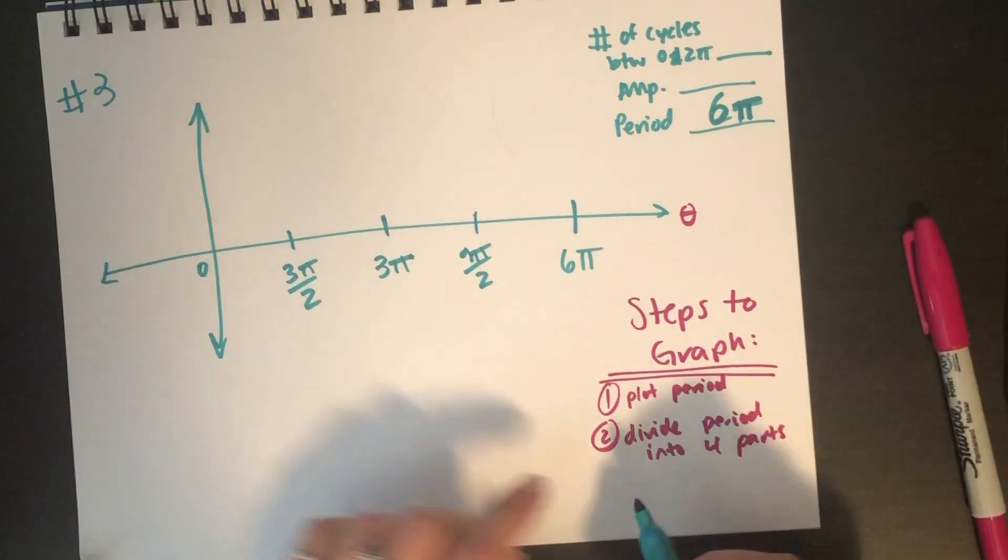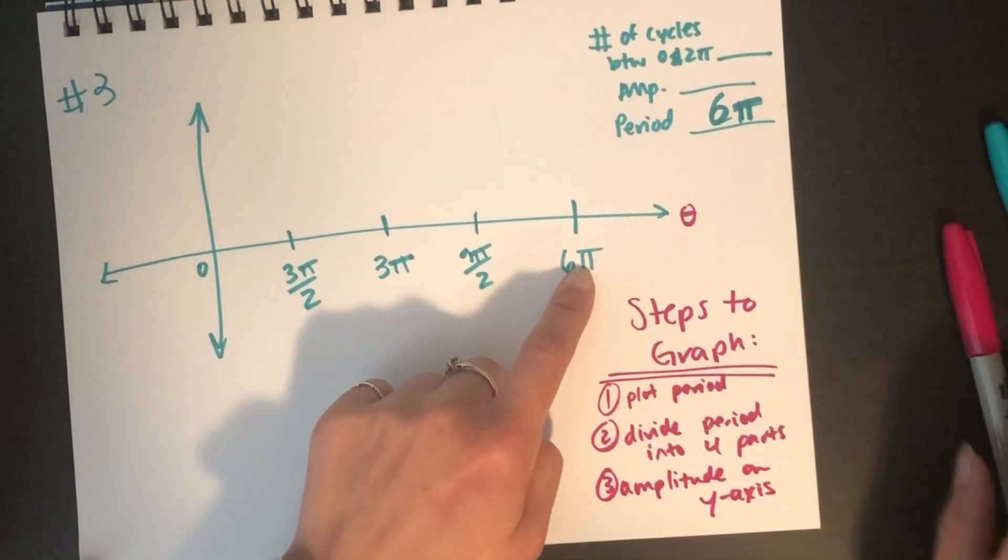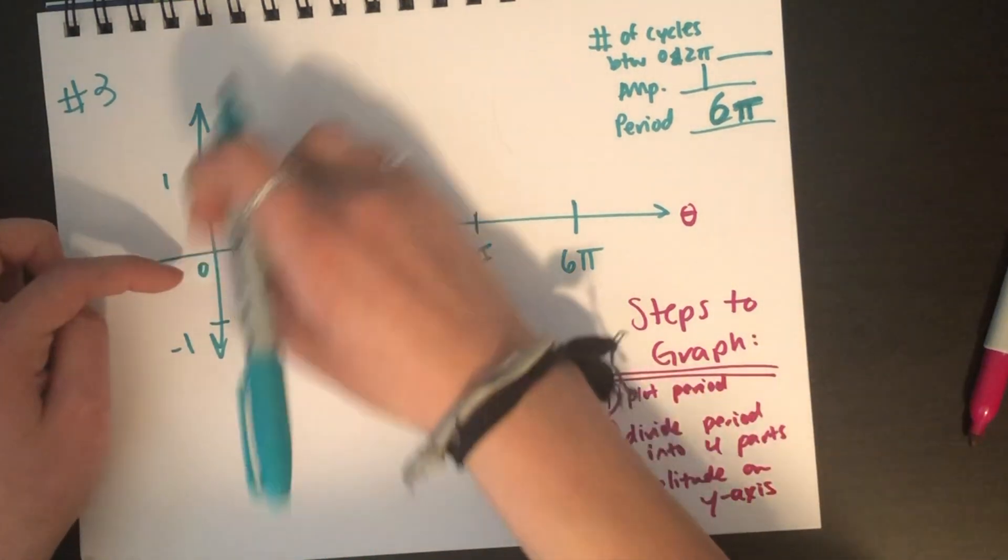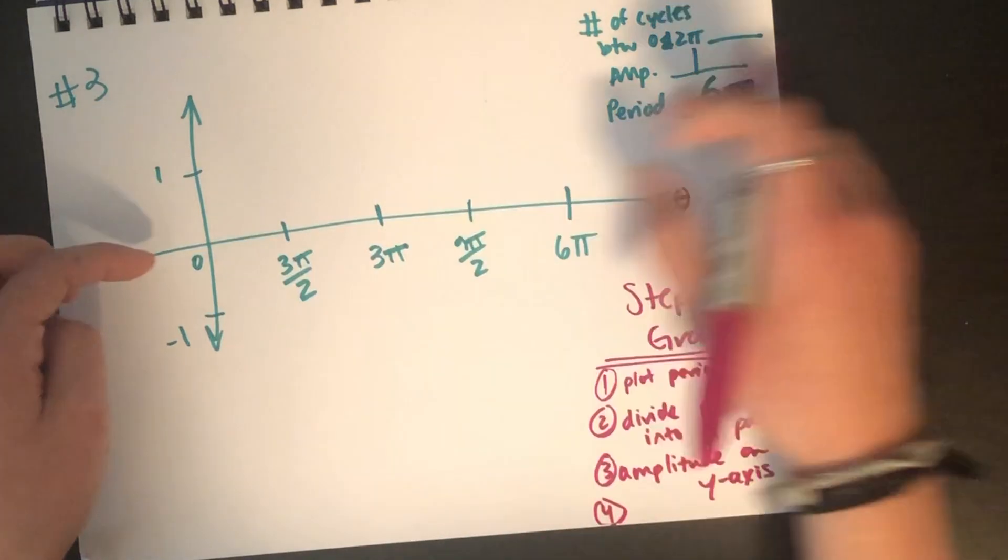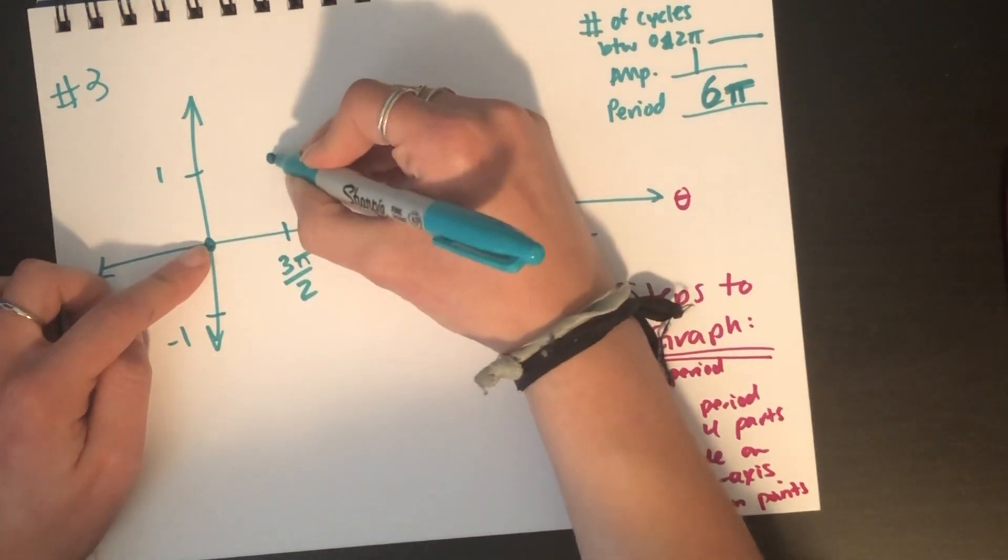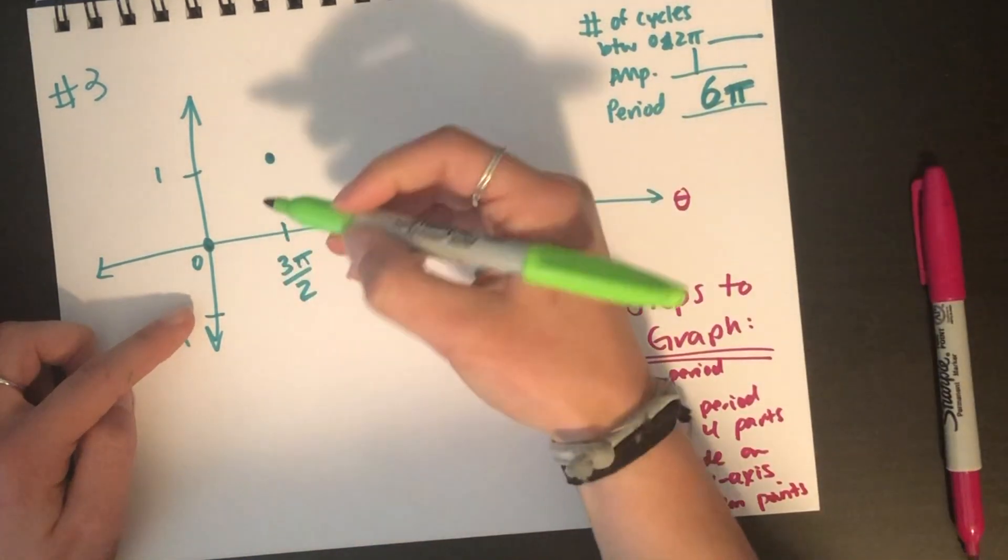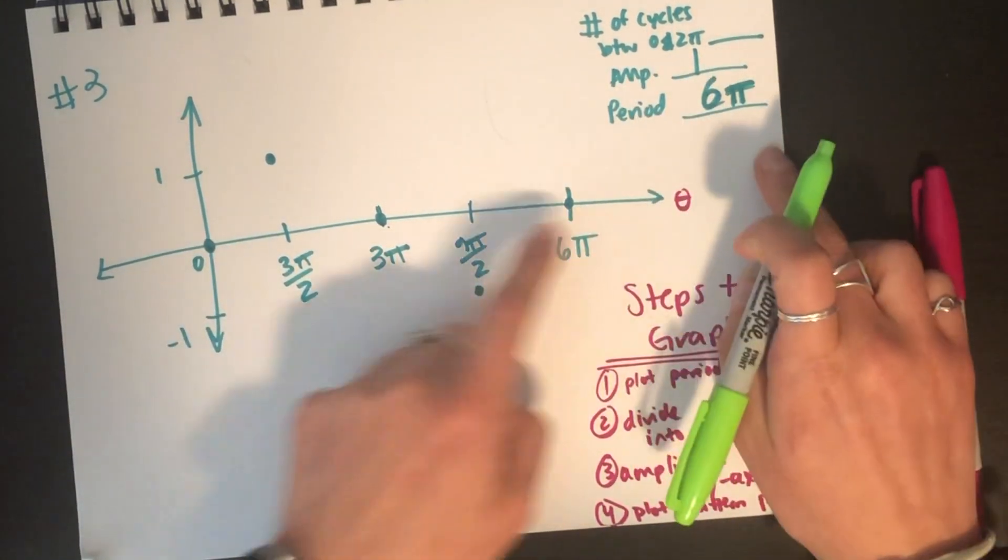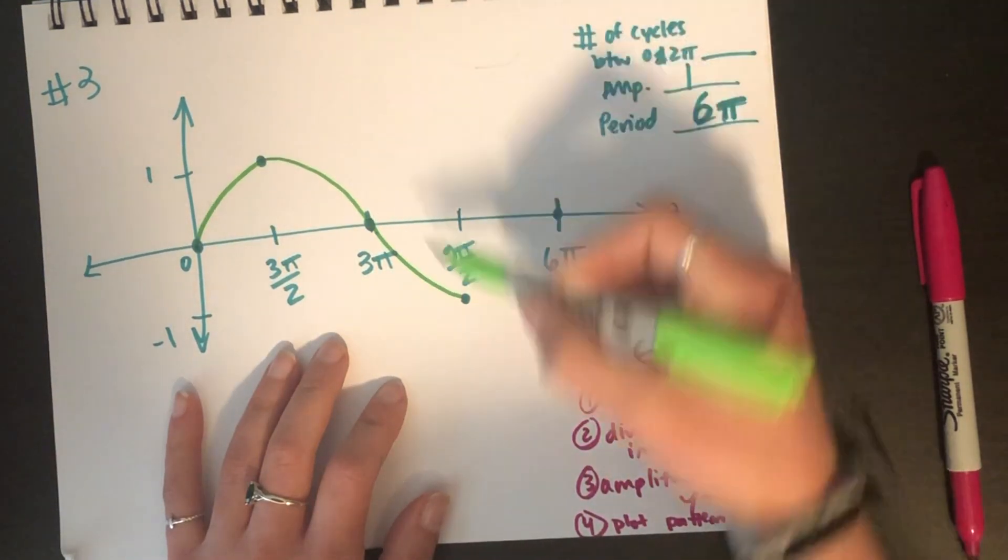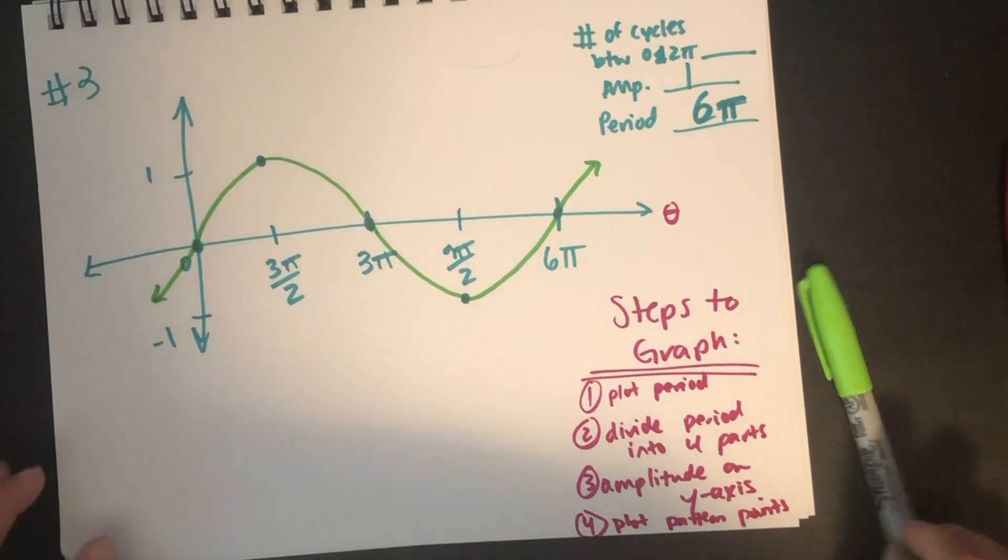Then, we would want to label our amplitude on our graph. Our amplitude here, since we're only changing the period, the amplitude would still just be one. So, we'll go ahead and label our one and our negative one so that we have space to put our pattern points. Then, finally, to finish our graph, we're going to just plot our pattern points. So, we would go, okay, sine starts at zero. Then, we go high, so up to that one. Then, we go back to zero. Then, we go low. Then, we go back to zero to finish sine. So, we went zero high, zero low, zero. Now, of course, it keeps going, but we were just trying to show that that period changed to six pi. So, then, when we draw in sine, we want to make sure we have a concave down like a frown, concave up like a cup. Then, we could show that this keeps going because it does keep going. Sine keeps going from negative infinity to positive infinity.